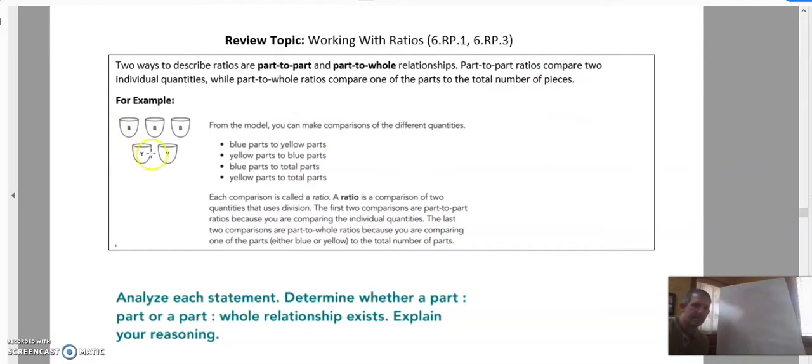This is our example. We have three blues and two yellows. You could say there are blues to yellows, yellow parts to blue parts, or blue parts to total parts, yellow parts to total parts. So each of these is a ratio, which is the comparison of two quantities.